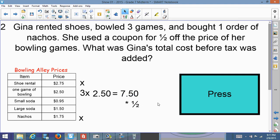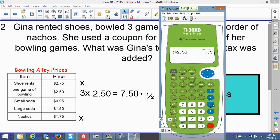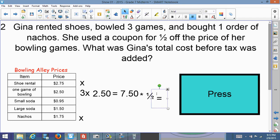So let's get our calculator. $7.50 times one half, and that gives us $3.75. So the bowling cost $3.75.